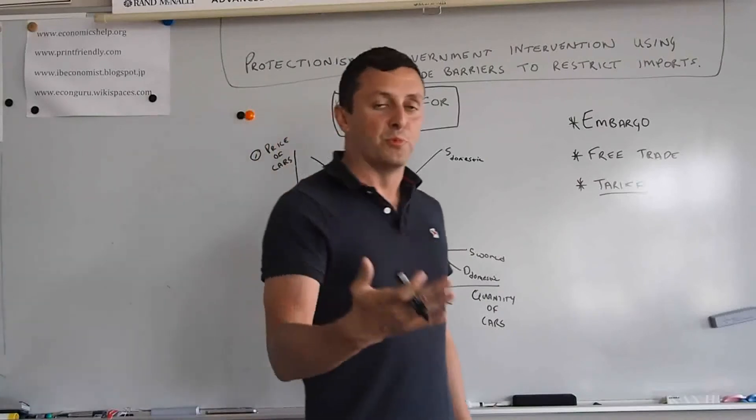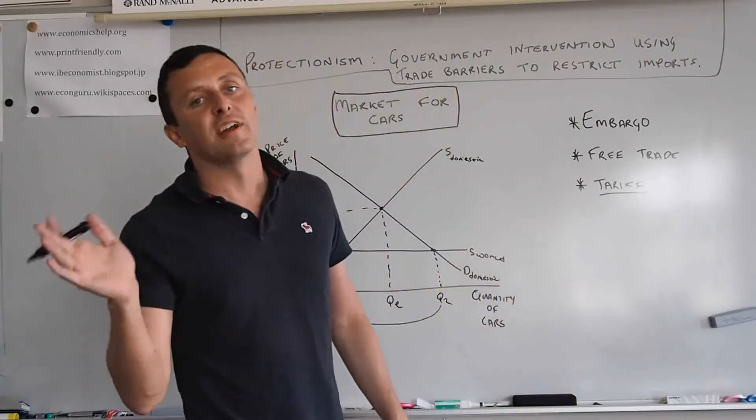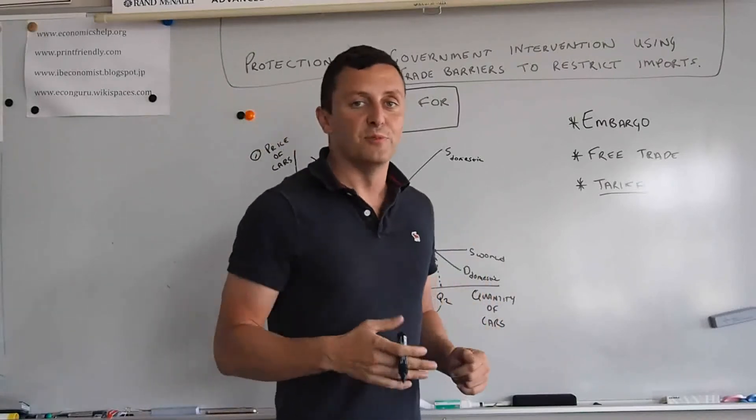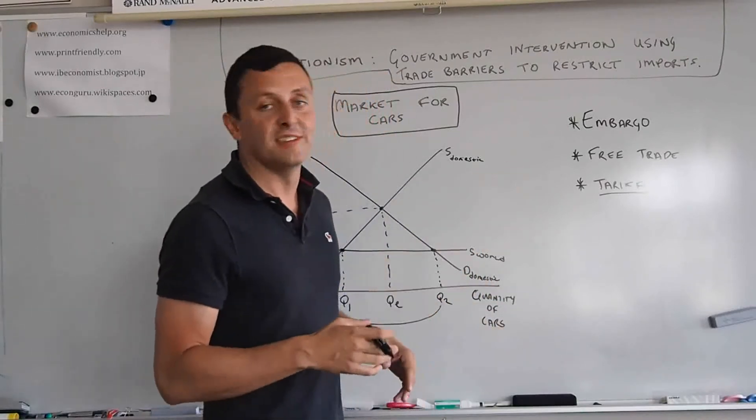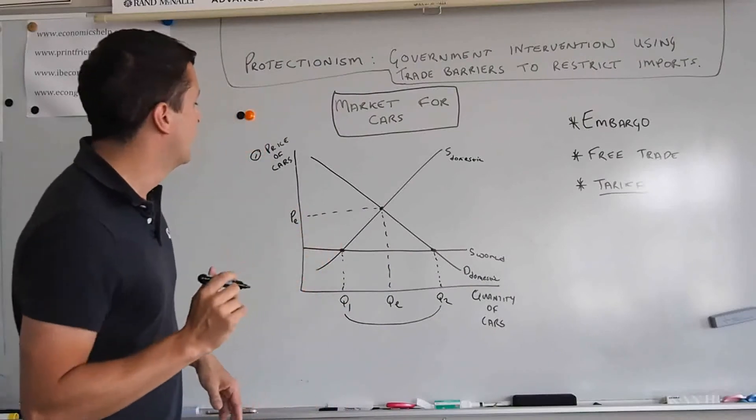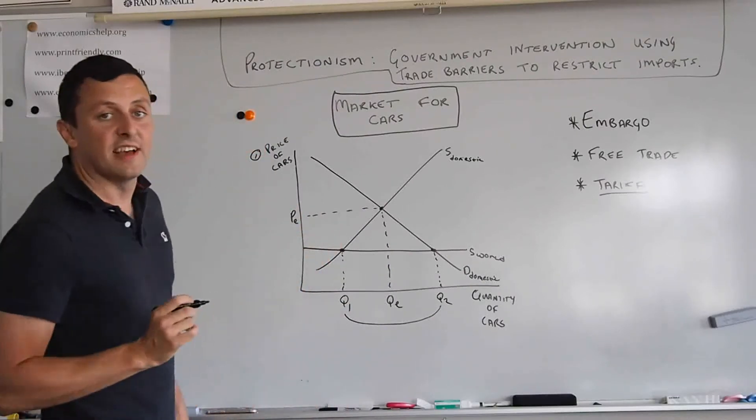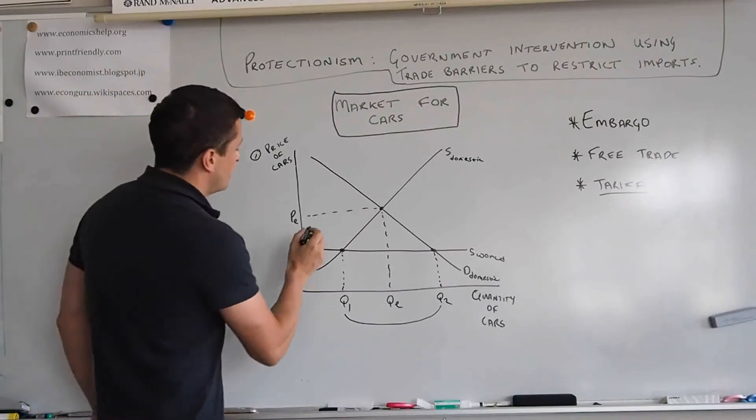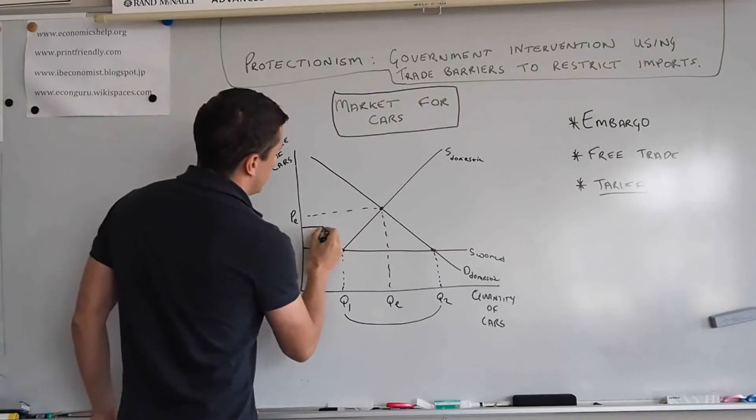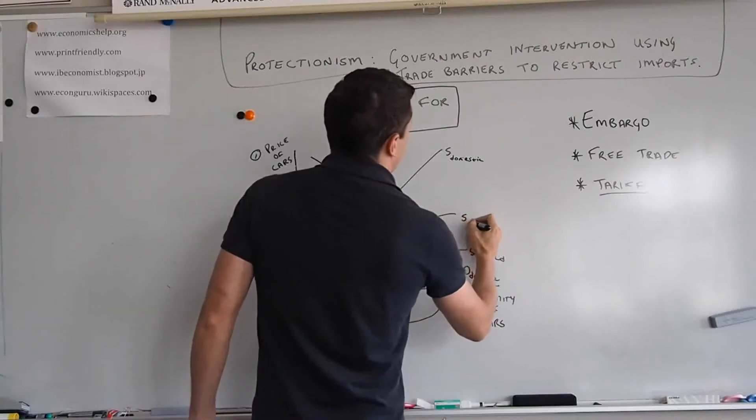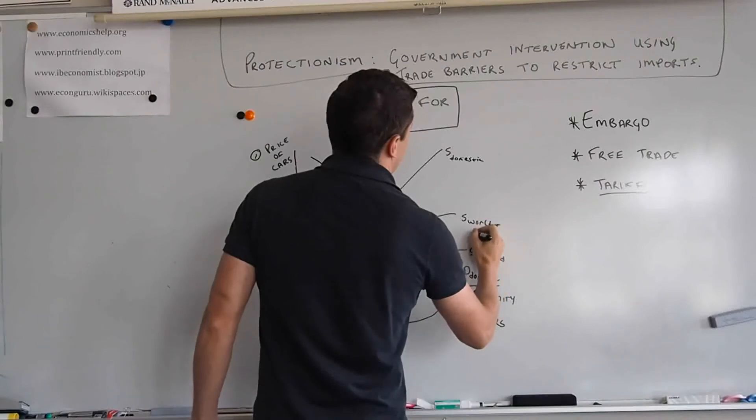And where I live now, Japan has extensive tariffs on many goods. And you can check that in your own country. There's many statistics and government websites showing you where the tariffs are. So we'll add the tariff onto this diagram. Really easy.